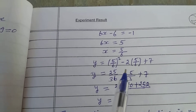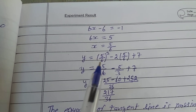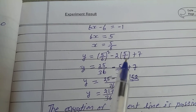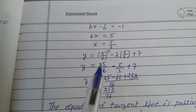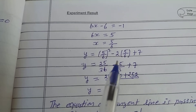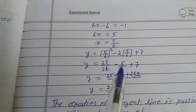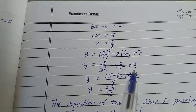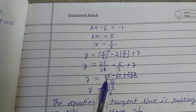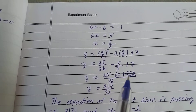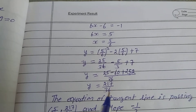To find y, substitute x = 5/6 into the curve equation: y = (5/6)² - 2(5/6) + 7 = 25/36 - 10/6 + 7. Taking LCM 36: y = (25 - 60 + 252)/36 = 217/36.